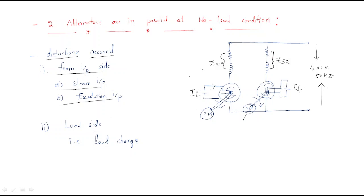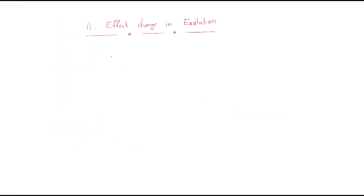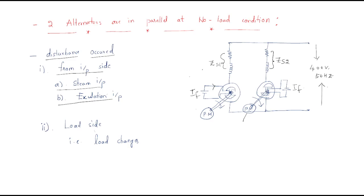Hello everyone. In the last session we discussed about how two alternators are connected in parallel — if any disturbances occurred on the input side how it affects, and if any disturbances occurred on the output side how it affects. Here we will discuss the effect of change in excitation. For example, both machines are initially operating at the same excitation, but assume that one machine's excitation is changed or varied — then how the alternator operation will be affected.